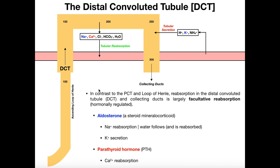Let's first look at the distal convoluted tubule. We can see that only a little bit is actually reabsorbed here, and these things are mostly hormonally regulated. Two of the most important things we see here are sodium and calcium, and then of course there's going to be water. The first way that we can regulate what's reabsorbed from the distal convoluted tubule is through one hormone called aldosterone.